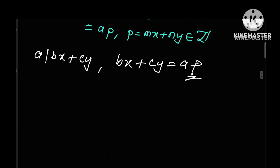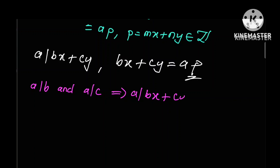Therefore we have proved that if a, b, and c are three integers such that a divides b and a also divides c, then a divides any linear combination of b and c. Thanks for watching — please do remember to subscribe to this channel in order not to miss any of our videos.